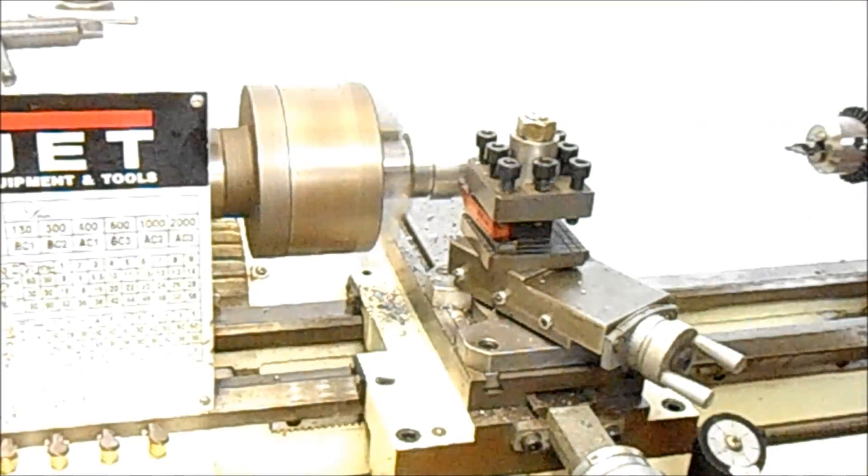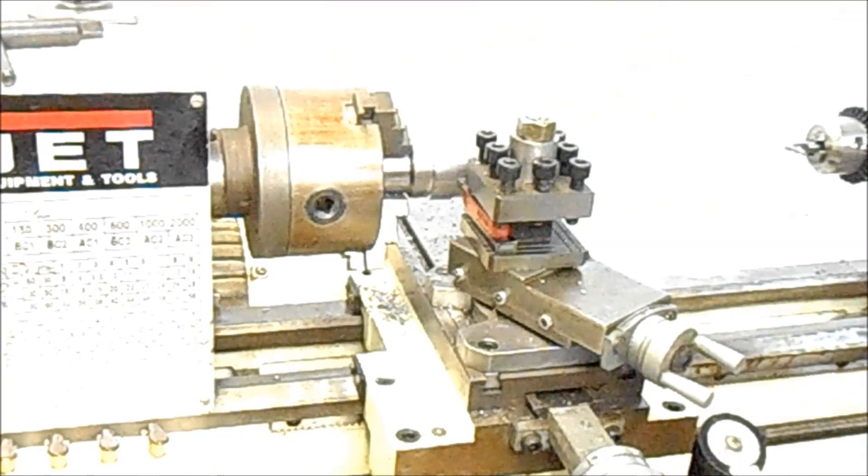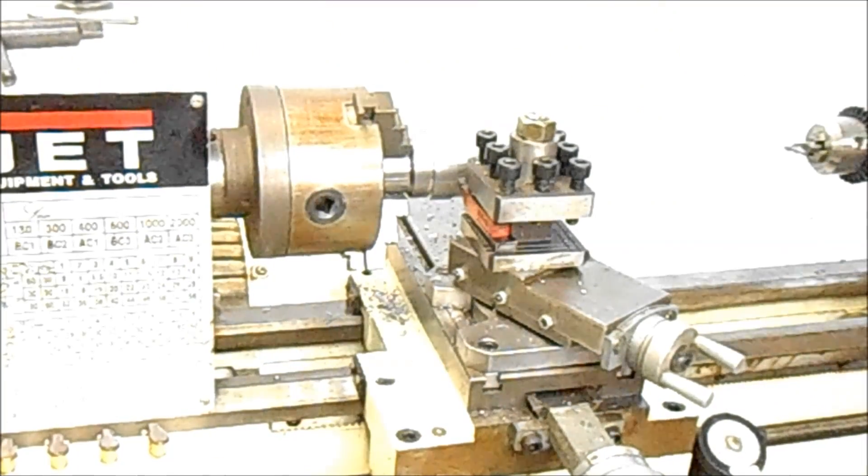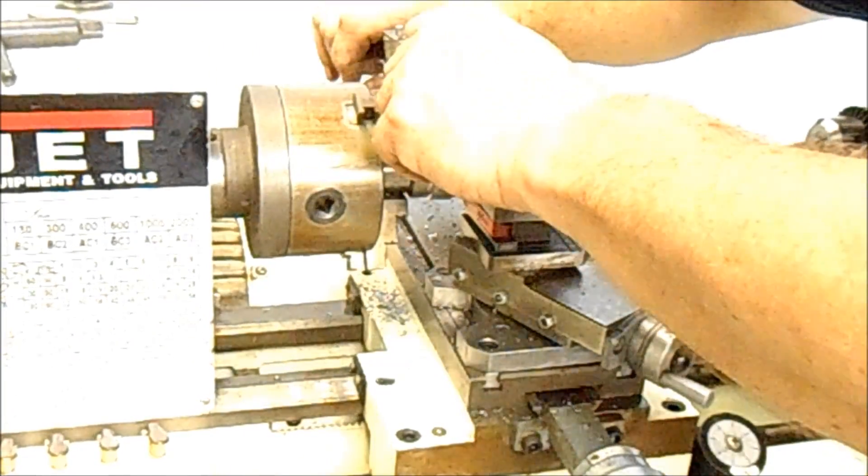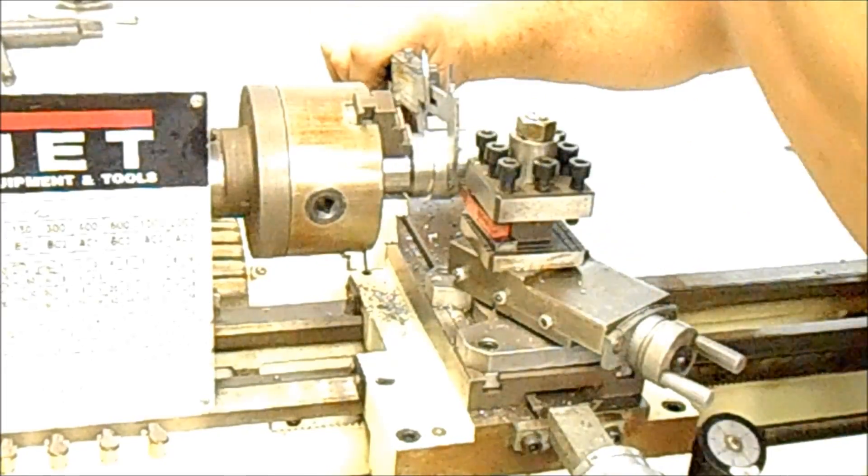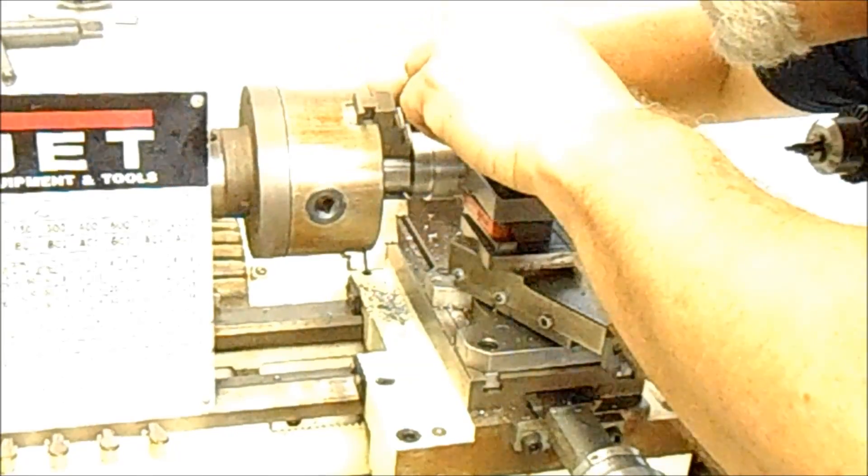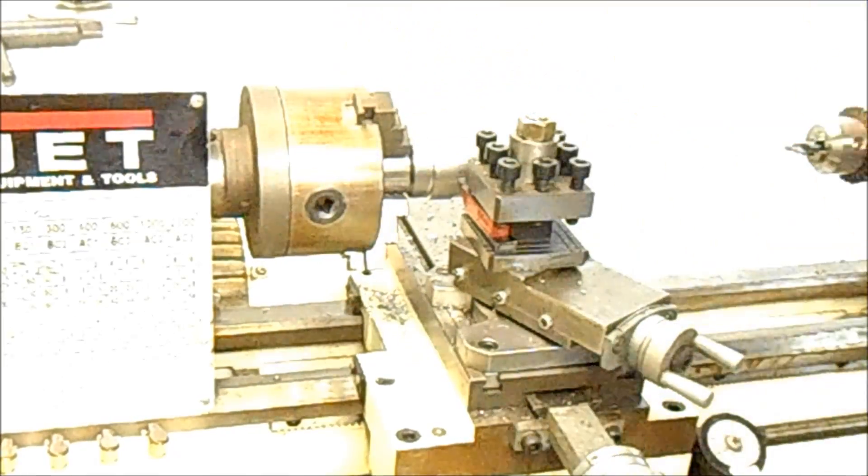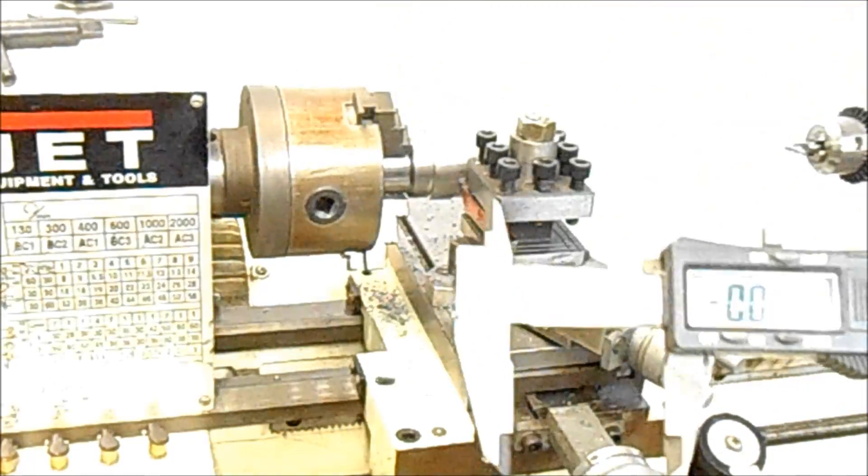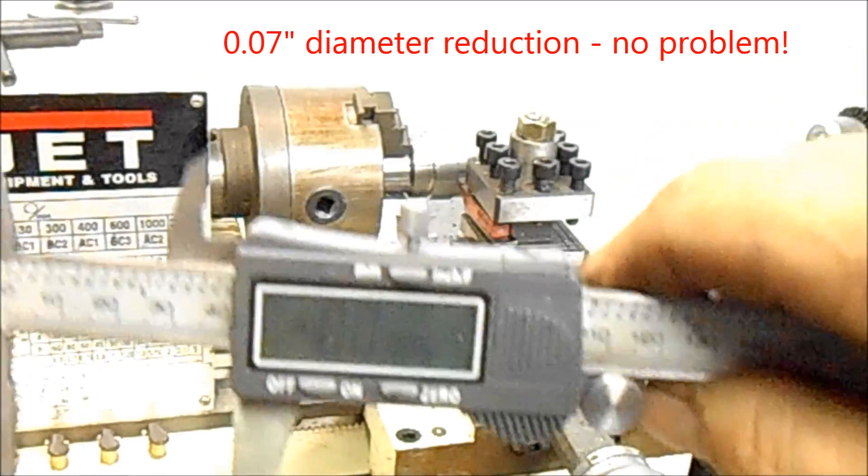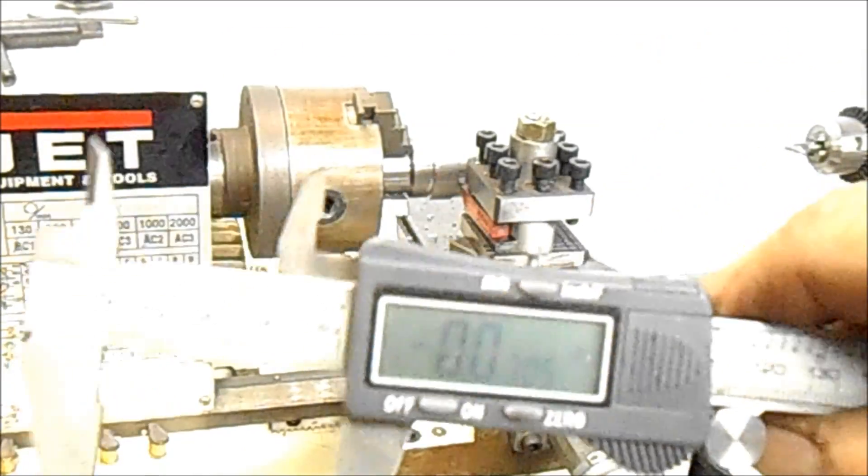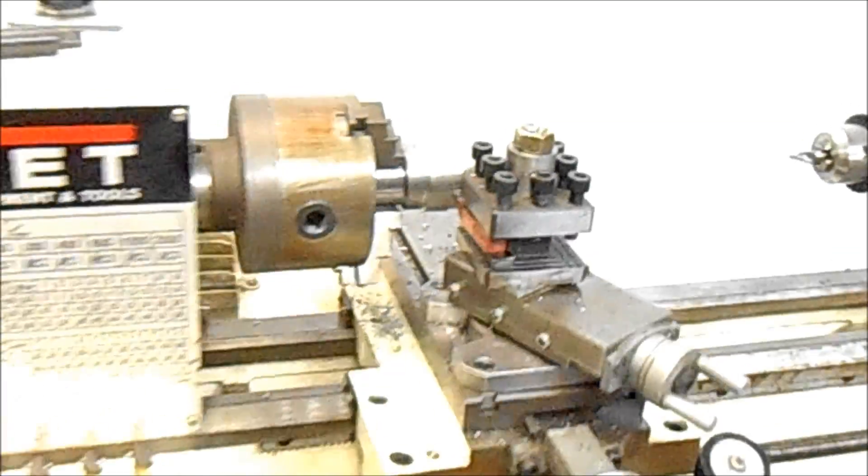We're going to take the caliper here now and just show how much we've taken off. About 70 thousandths on the diameter, so about 35 thousandths on the radius in one cut. And this is not an inserted carbide. It's a cemented carbide.